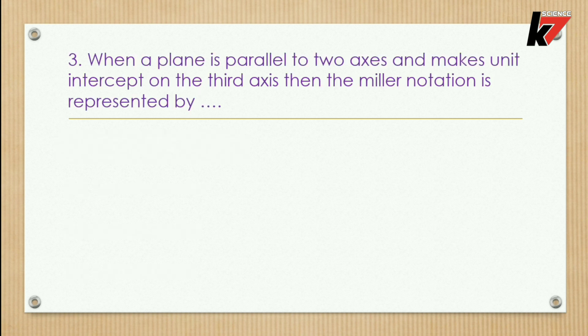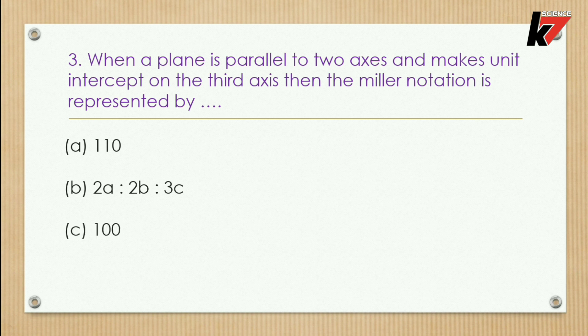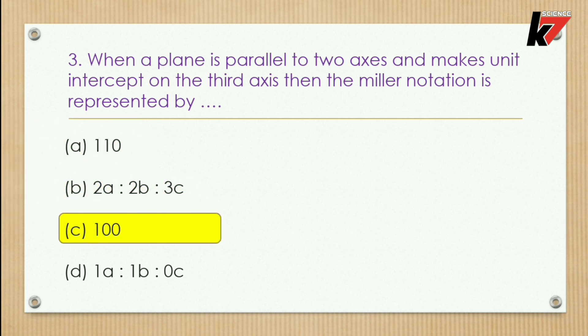Question 3: When a plane is parallel to two axes and makes a unit intercept on the third axis, the Miller notation is represented by — options: 110, 2a:2b:3c, 100, or 1a:1b:0c. The correct option is 100.